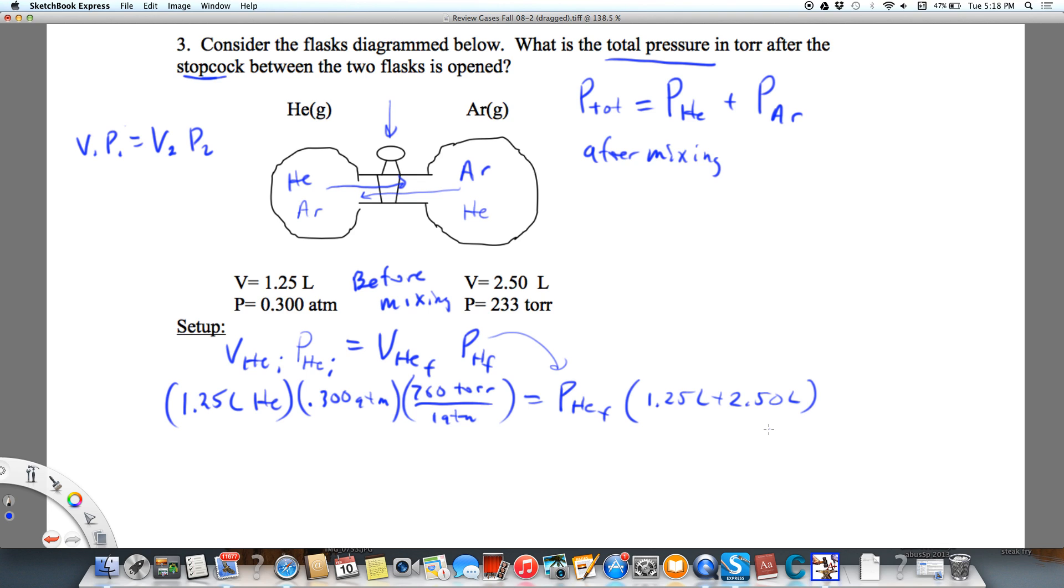That's going to total 3.75 liters. So when we calculate all of this, the pressure of helium final is going to equal 76.0 torr. And that's going to be what goes right up here. So this is going to be 76.0 torr.